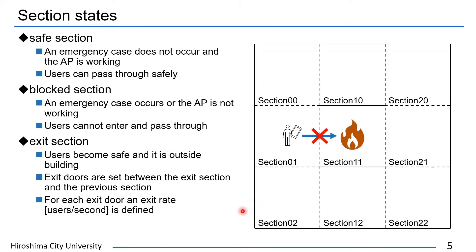User terminals share the section state of each section among users, and the states are used to select an evacuation route. The state is classified into three states: safe, blocked, and exit.